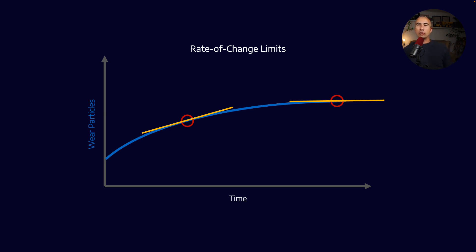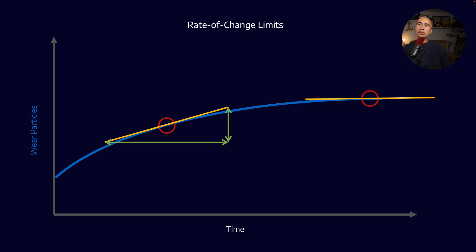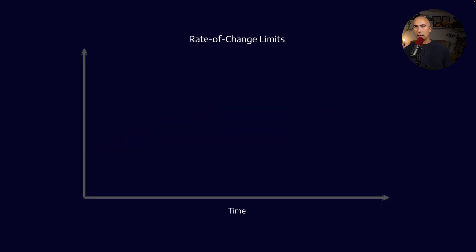If we want to calculate the rate of change, what we do is we take the rise and we divide it by the run. And if you ever have a little bit of trouble remembering whether it's rise over run or run over rise, probably the easiest way to do it is to actually use the units. So in this case, the rise is measured in parts per million of wear particles, and the run is measured in time or hours. And so that gives us a rate of change of wear particles per million divided by hours. So that gives us a rate of change limit.